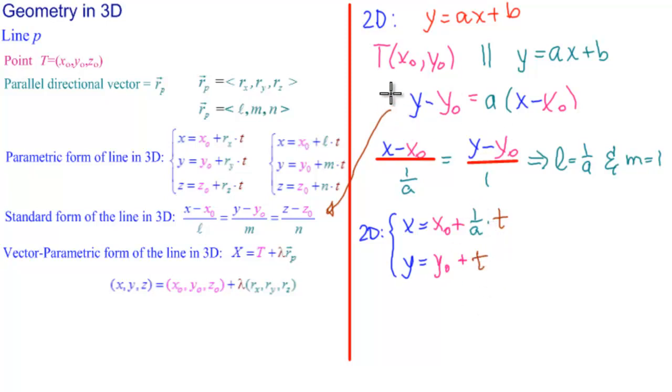So if we're told to find the parametric form of a line passing through this point and parallel to this line, here we go.